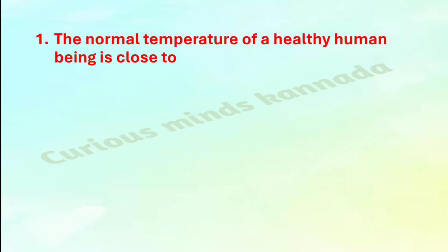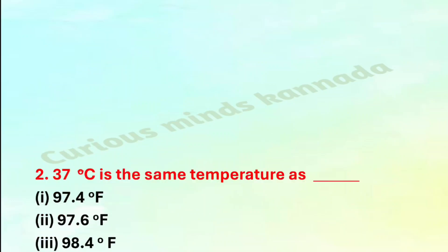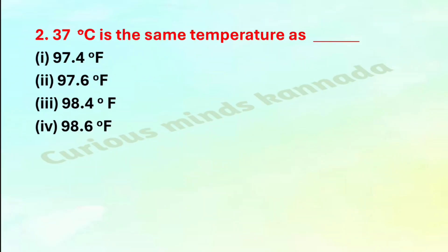First question: The normal temperature of a healthy human being is close to — option one: 98.6 degree Celsius, option two: 37 degree Celsius, option three: 32 degree Celsius, option four: 27 degree Celsius. The correct answer is option two: 37 degree Celsius.